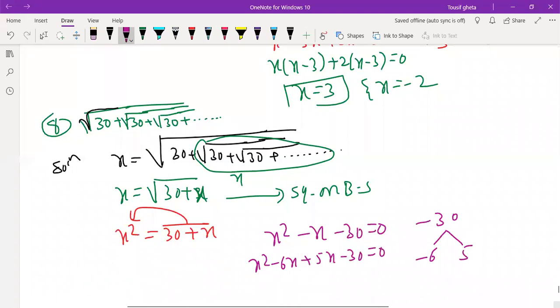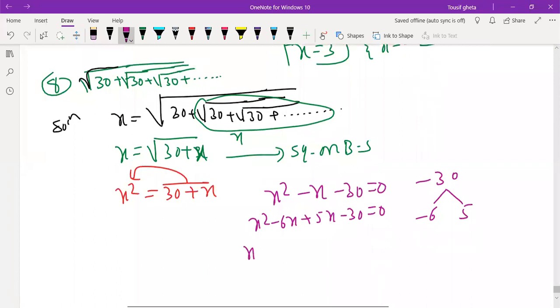You can take x common and answer we will get. x of x minus 6 plus 5 of x minus 6 equals to 0. x equals to 6 and x equals to minus 5. Done.